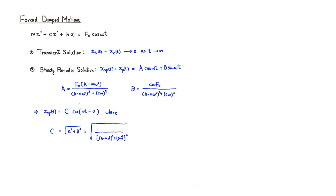We square the numerator of A, giving f₀². Since f₀ appears in B as well, we combine them. Squaring gives (k − mω²)² from A and (cω)² from B. Luckily the same expression appears in numerator and denominator and we cancel one of them, leaving f₀² under the square root — so the numerator becomes simply f₀. The denominator remains √[(k − mω²)² + (cω)²].